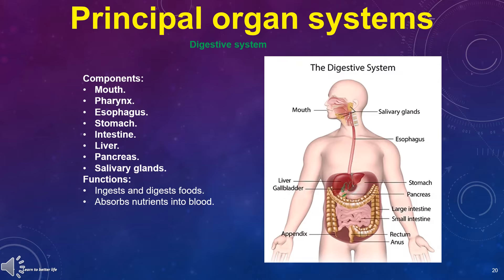The digestive system components are the mouth, pharynx, esophagus, stomach, intestine, liver, pancreas, and salivary glands. Its functions are: ingests and digests foods, and absorbs nutrients into blood.